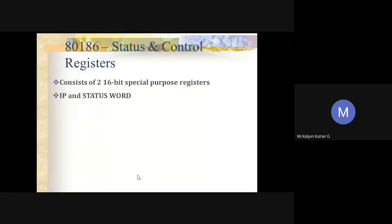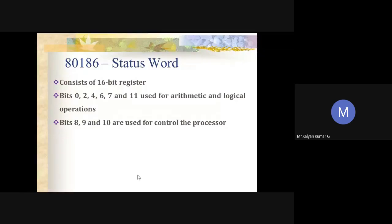For status and control registers: in 80186, we have two 16-bit special function registers — the instruction pointer (IP) and the status word. The IP register contains the offset address of the next sequential instruction to be executed. The status word contains the status and control flag bits and is also used to record or alter different aspects of the 80186 processor state. It is almost similar to the PSW of 8086, being a 16-bit register.